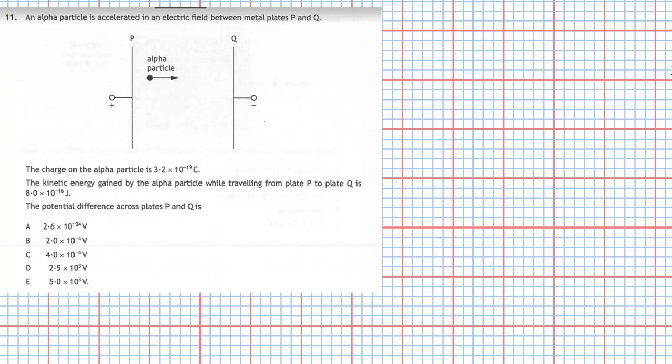Remember, if the alpha particle gains kinetic energy, there must have been some work done on it. The work is done on the alpha particle by the electric field. Remember the electric field lines go from the positive plate to the negative. The arrow indicates the direction of the force experienced by a positive charge. An alpha particle is a positive charge, so the alpha particle is going to be accelerated from P towards Q. The electric field will do work on the alpha particle.